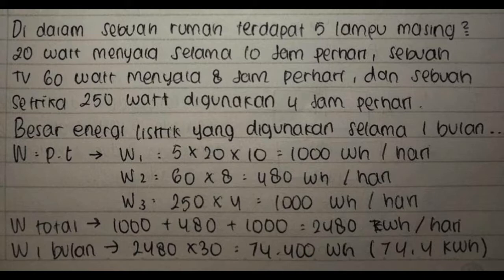Jawaban: W sama dengan P dikali T. W1 sama dengan 5 kali 20 dikali 10 sama dengan 1000 WH per hari. W2 sama dengan 60 dikali 8 sama dengan 480 WH per hari. W3 sama dengan 250 kali 4 sama dengan 1000 WH per hari. W total sama dengan 1000 plus 480 plus 1000 sama dengan 2480 WH per hari. W 1 bulan sama dengan 2480 dikali 30 sama dengan 74.400 WH atau 74,4 KWH.